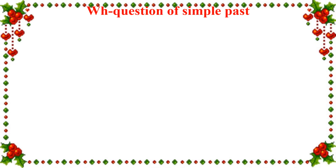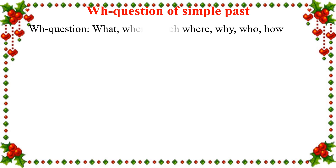WH-questions of simple past. Questions using question words beginning with W and S. They include: What? (Gì?) — When? (Khi nào?) — Which? (Cái nào?) — Where? (Ở đâu?) — Why? (Tại sao?) — Who? (Ai?) — How? (Như thế nào?) Now let's look at some examples together.